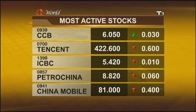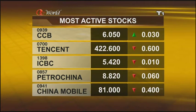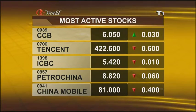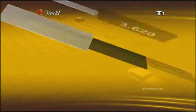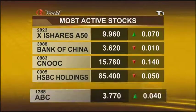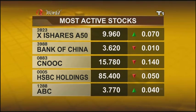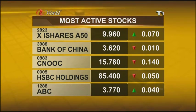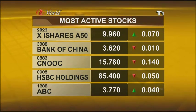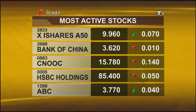China Construction Bank added 3 cents. A loss of 1 cent for Industrial Commercial Bank of China, while PetroChina lost 6 cents. Bank of China lost 1 cent, 14 cents down for Sinopec, while HSBC trimmed 5 cents.